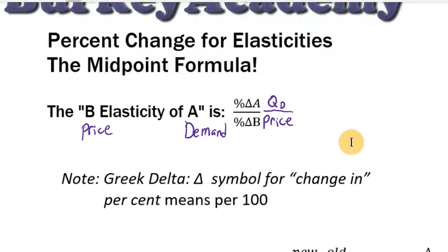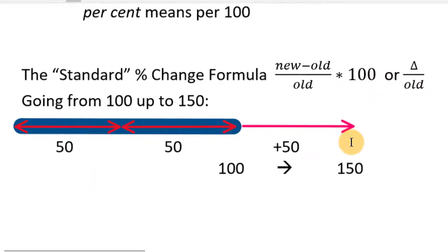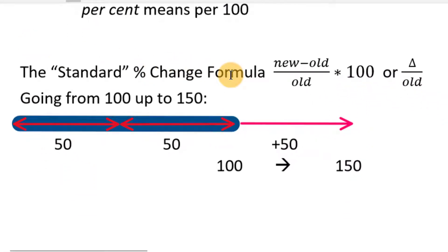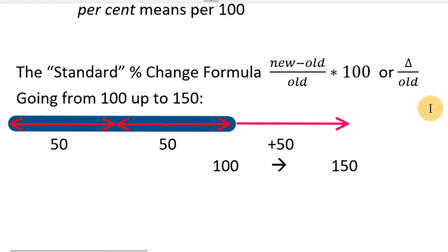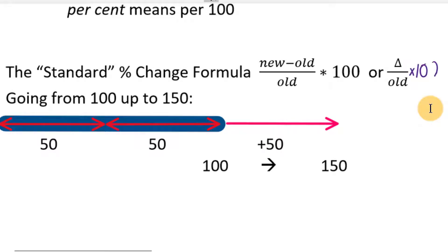Before we talk about the midpoint formula, let's compare it to the standard percent change formula. The standard percent change formula is: take the new number minus the old or original value, divide it by the original value, and multiply by 100. A shortcut: instead of new minus old, just think of it as the change — how much is this value changing between the two numbers — then divide by the old number and multiply by 100.